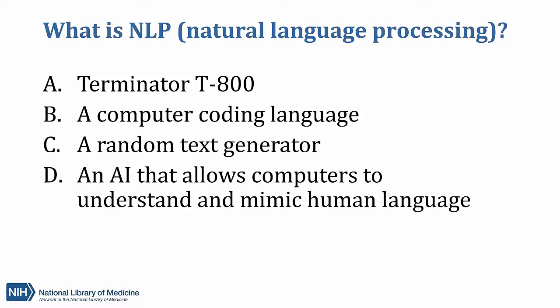We have a quick knowledge check. Feel free to drop your answers in the chat. What is natural language processing? A: Terminator T-800. B: A computer coding language. C: A random text generator. D: An AI that allows computers to understand and mimic human language.